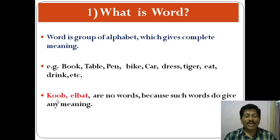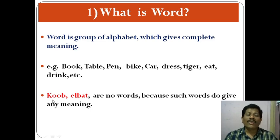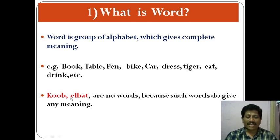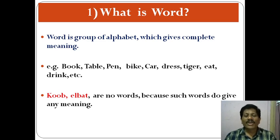Here also we can see a group of letters, but they are not words. For example, K-O-O-B — is it a word? No. Though you have the alphabets there, you don't find any word which gives you complete meaning. Then E-L-B-A-T — here also we find alphabets, but we don't have a word which gives complete meaning. Such groups of alphabets are not called words, because they do not give any meaning.